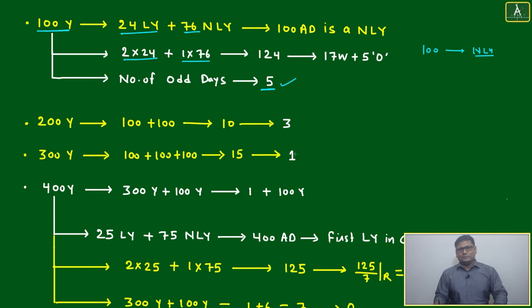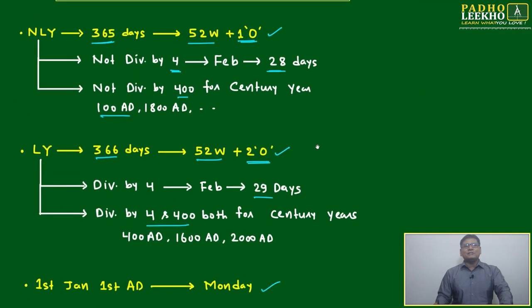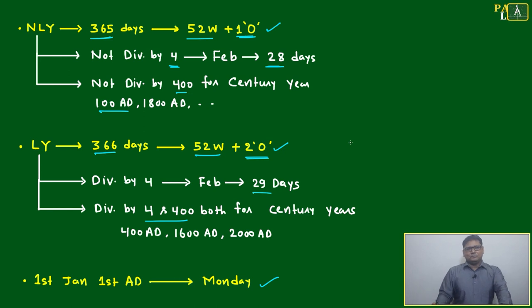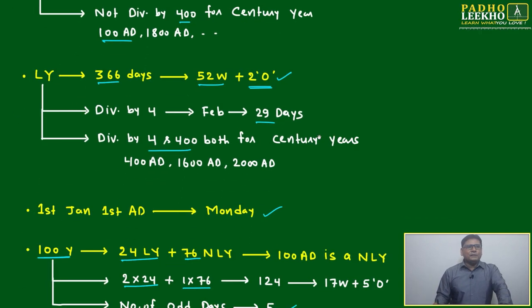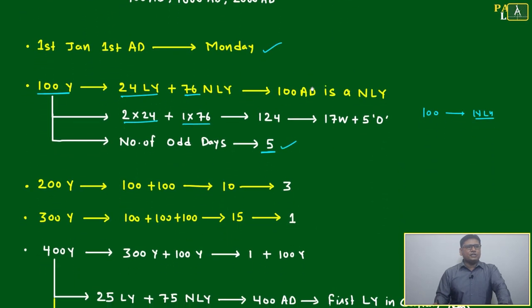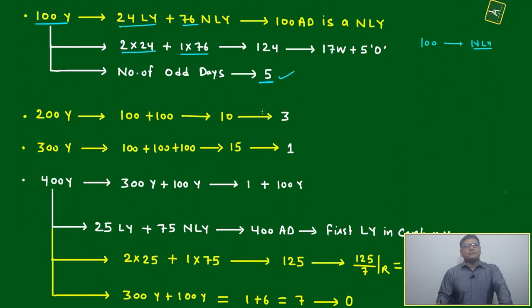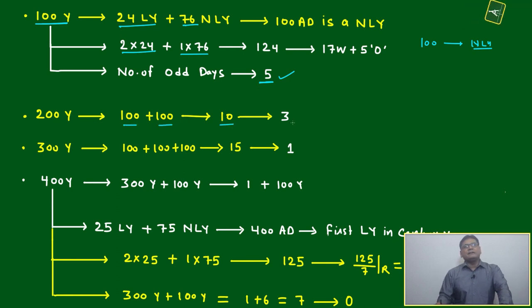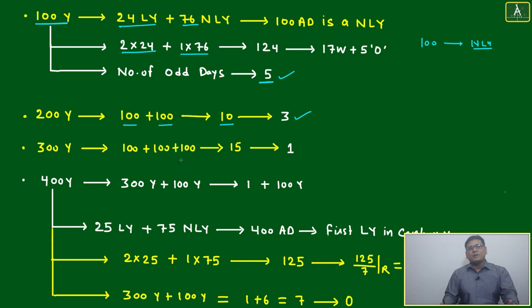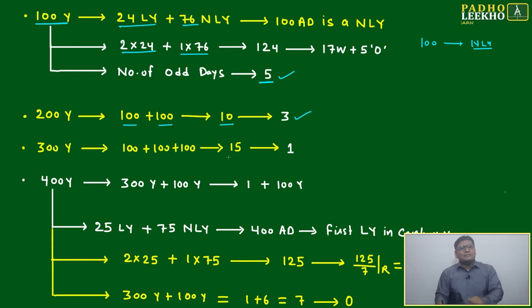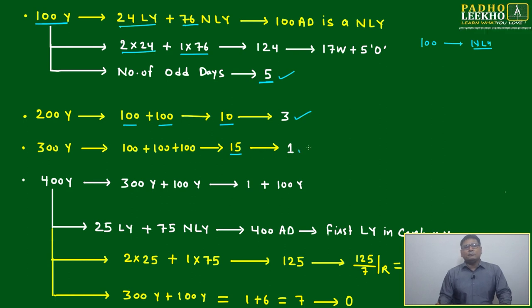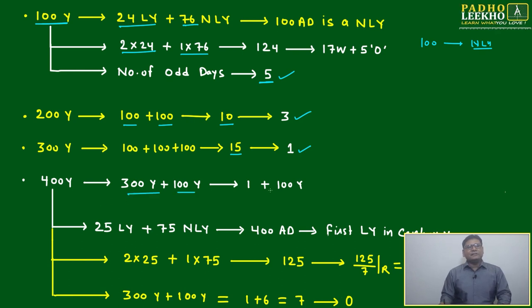Just keep five data points in mind — this will be sufficient to handle any calendar question. Non-leap year: 1 odd day. Leap year: 2 odd days. First 100 years: 5 odd days. 200 years: 5 + 5 = 10, divided by 7 gives 3 odd days. 300 years: 5 + 5 + 5 = 15, divided by 7 gives 1 odd day.